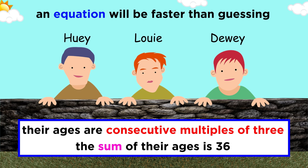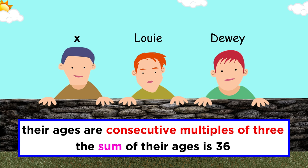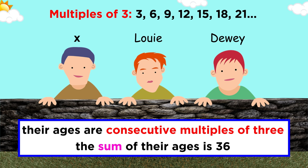Here we start to see the benefit of constructing an equation, because while it is certainly possible to just guess and check, once a problem gets sufficiently complex, solving an equation becomes much easier than guessing the answer. Let's say the youngest brother has an age equal to X. What would be the other two ages in terms of X? Well, if the ages are consecutive multiples of three, and each multiple is three more than the last, then the other two ages must be X plus three, and X plus three plus three, or X plus six.